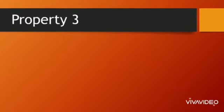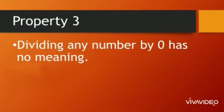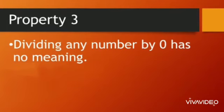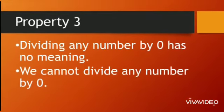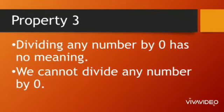Now, third property of division. According to this property, dividing any number by 0 has no meaning. So, we cannot divide any number by 0.